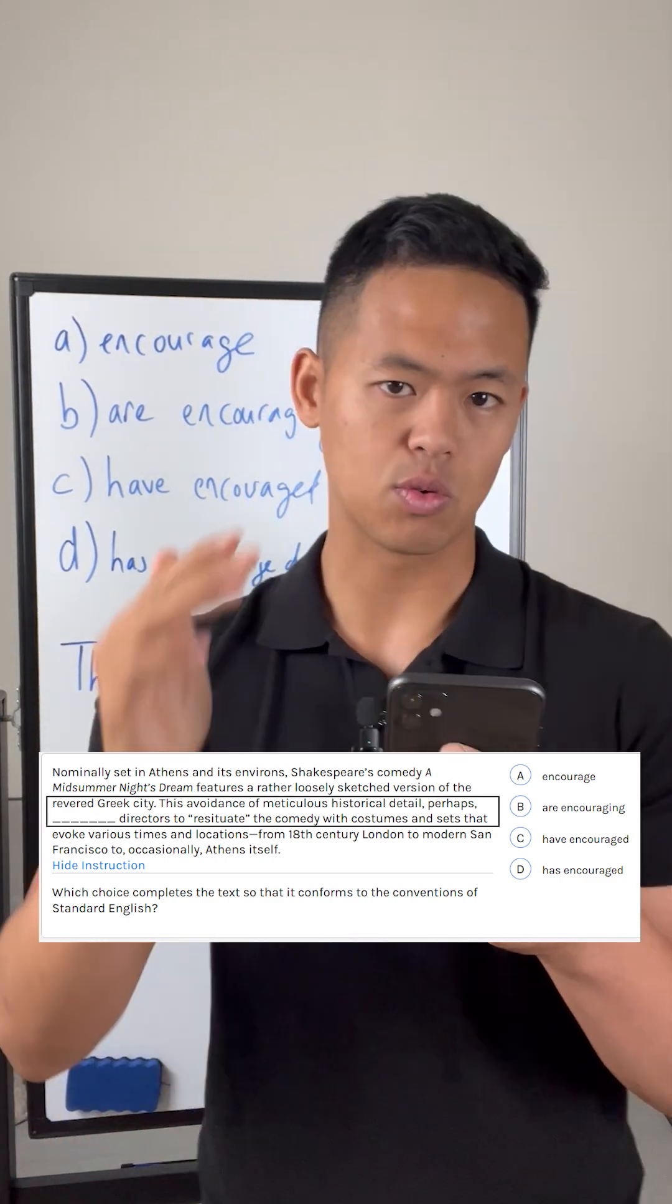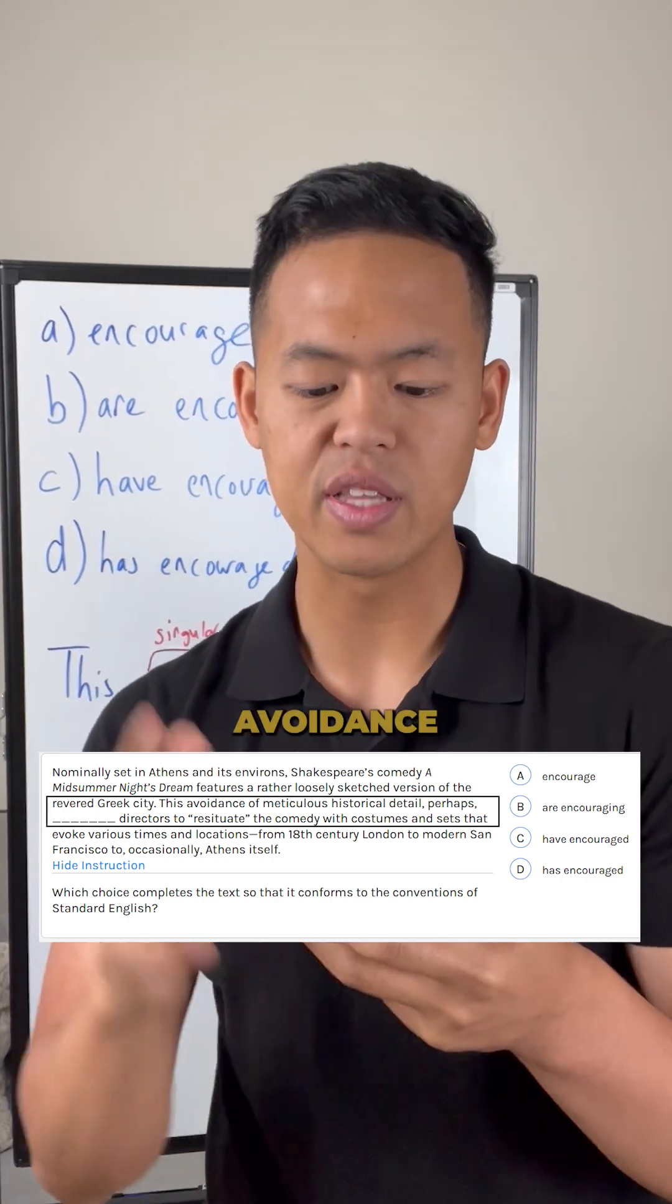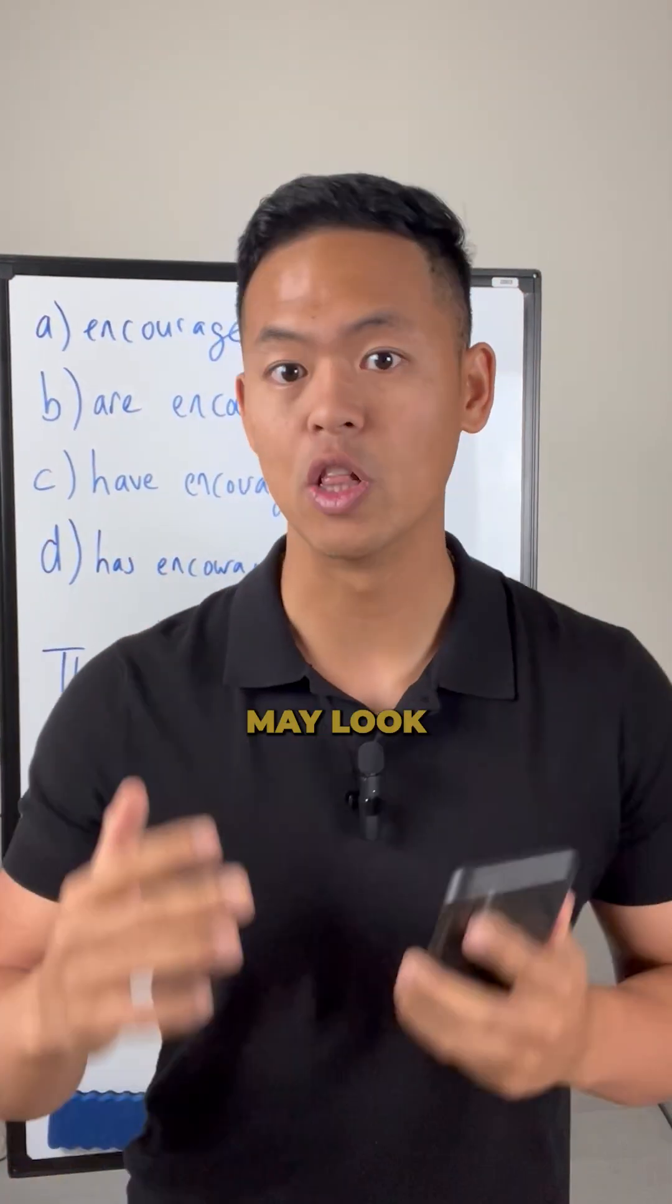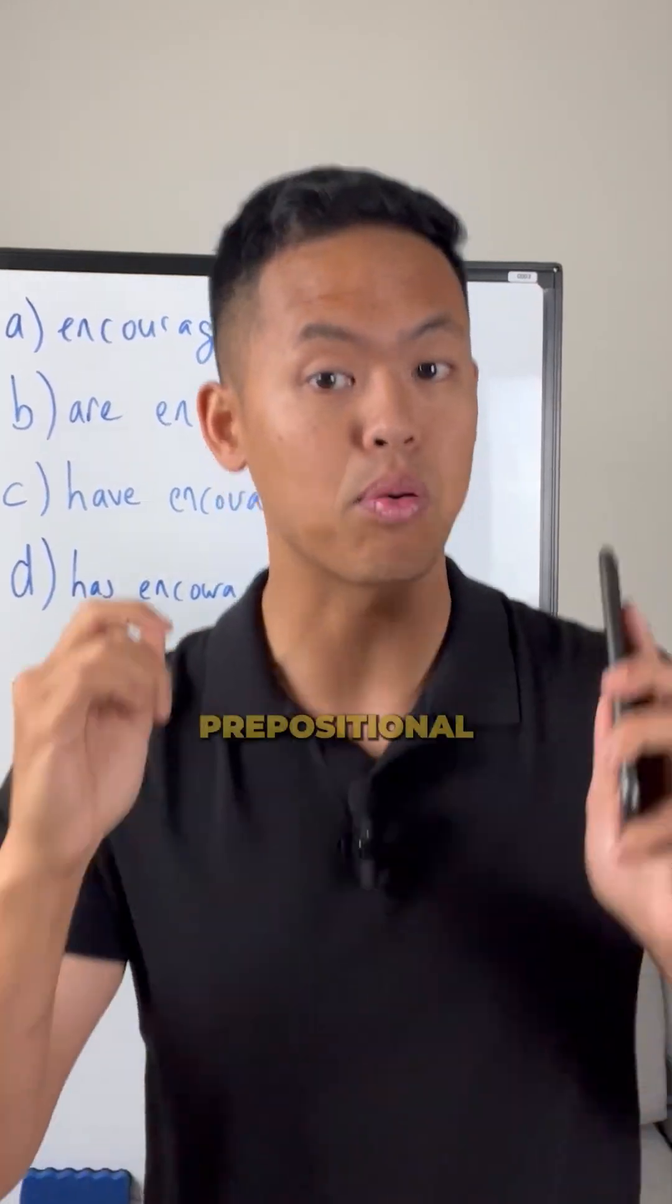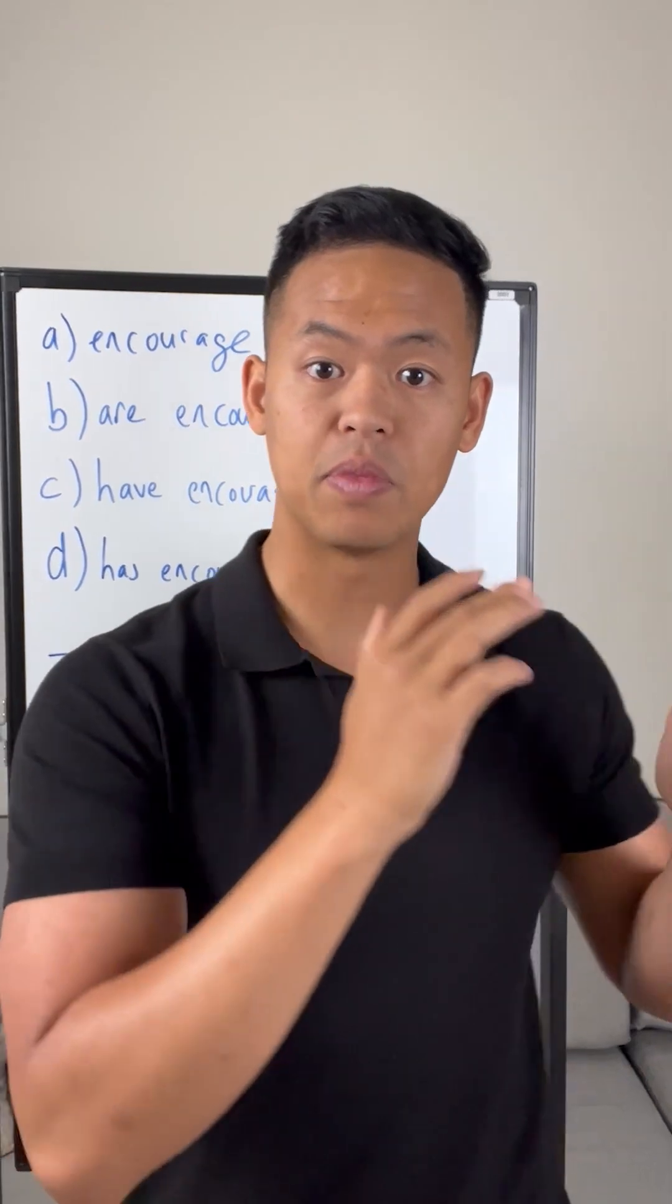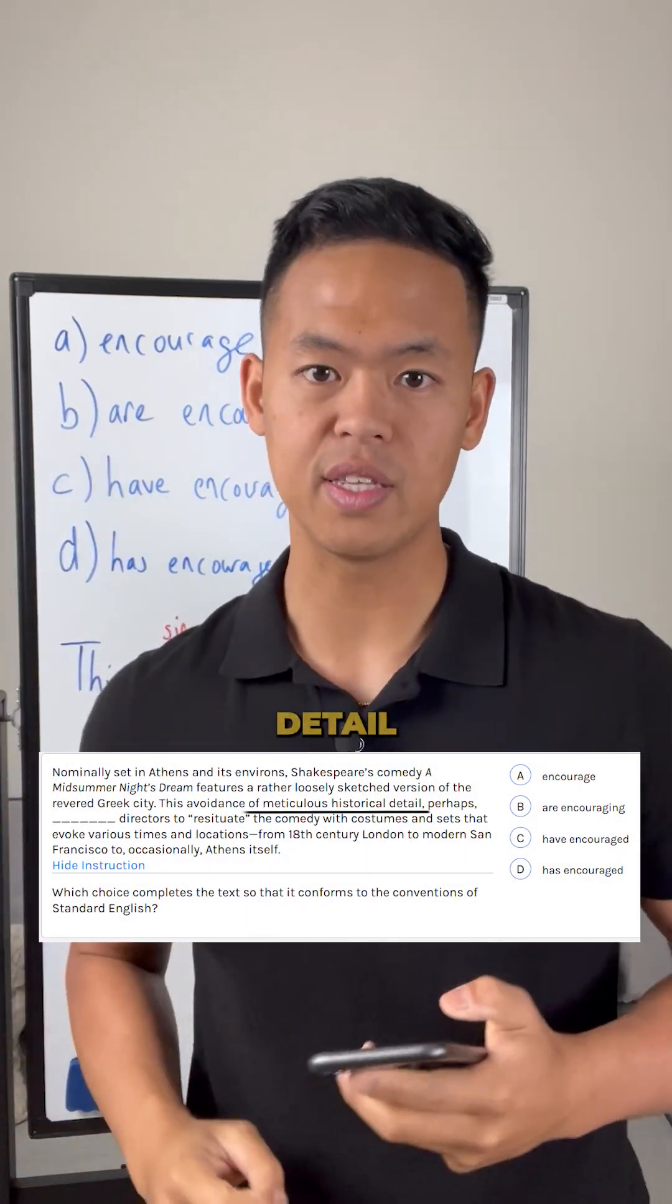That leaves us with this really clunky sentence: this avoidance of meticulous historical detail perhaps blanks directors. This sentence may look complex, but because there is a prepositional phrase that separates the noun from the verb, we can get rid of meticulous historical detail.